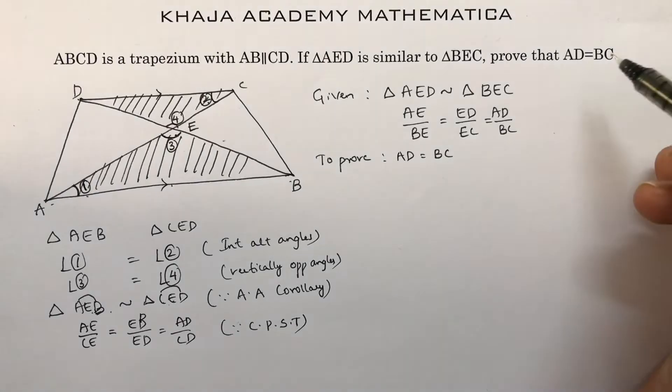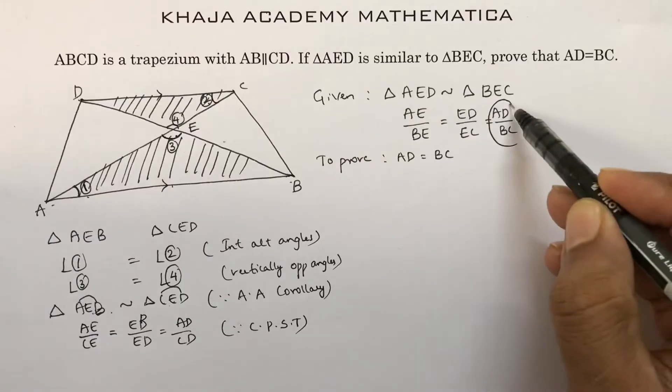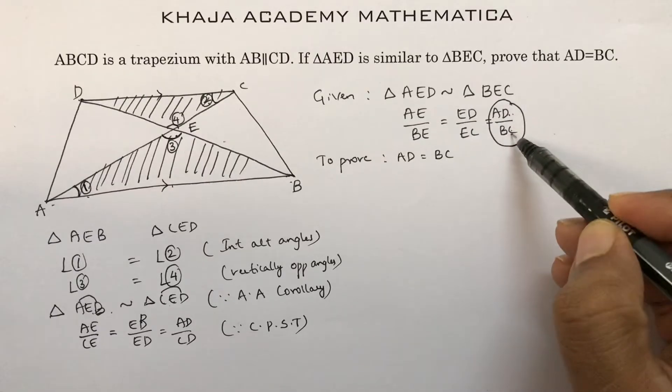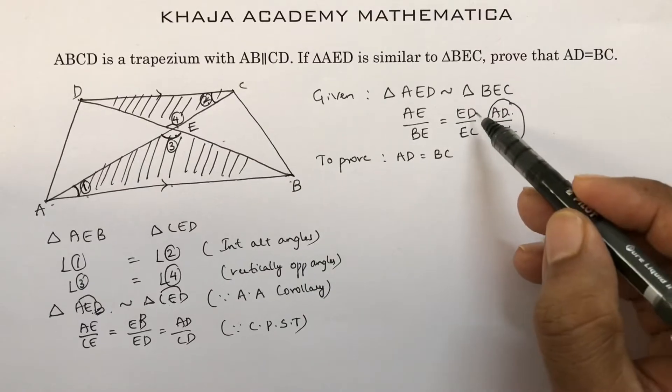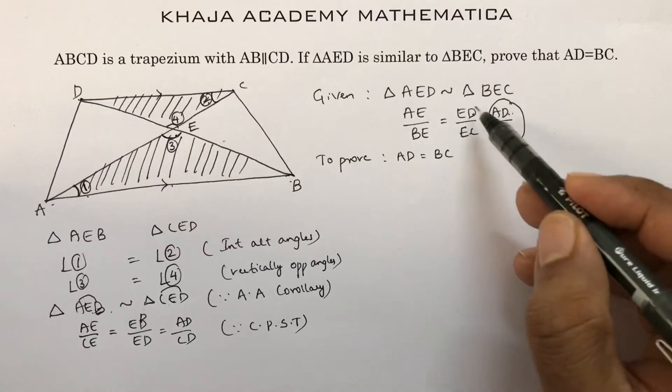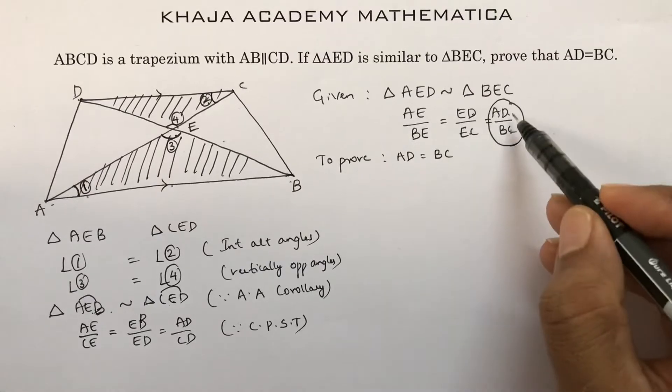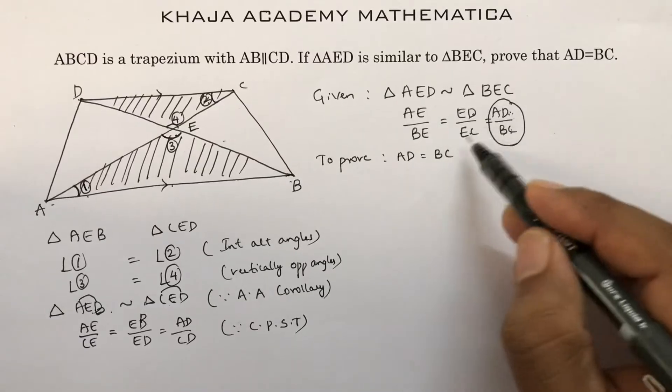Now see, we need to prove AD is equal to BC. I can say if ED by EC equals 1, then I will write AD by BC equals 1, so AD is equal to BC. To prove that, see here we have AE by BE.